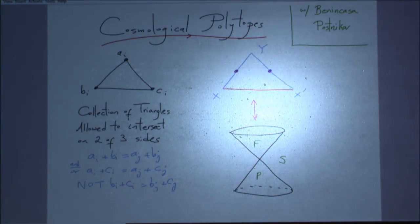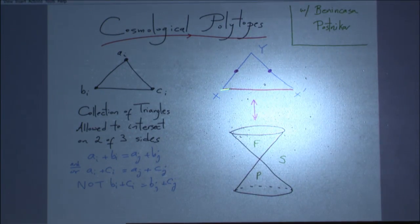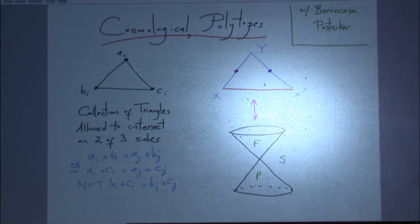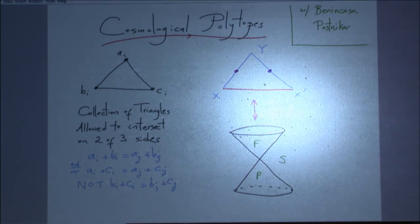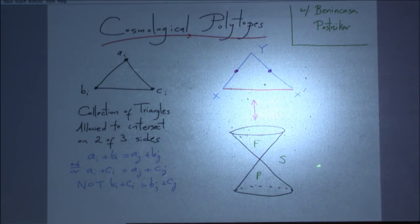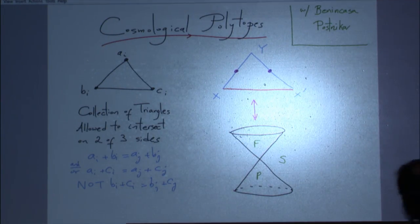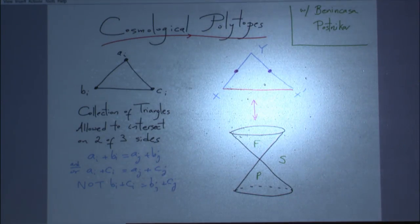What does this remind you of? In physics, we're familiar with a threeness where two things are of one kind and one is of another — exactly the picture of how light cones divide spacetime into regions. We have a future and a past and space-like separation. Future and past are going to descend from the two friendly edges, and space-like separation is going to descend from the unfriendly one.